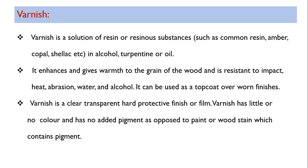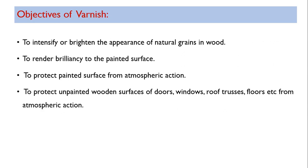Since varnish has no pigments, it is applied as a coating only on the painted surface. Objectives of varnish: to intensify or brighten the appearance of natural grains in wood. Varnishes are normally provided for wooden surfaces to brighten and intensify them. Also, to render brilliancy to the painted surface and to enhance the beauty of the paint. To protect painted surfaces from atmospheric action.